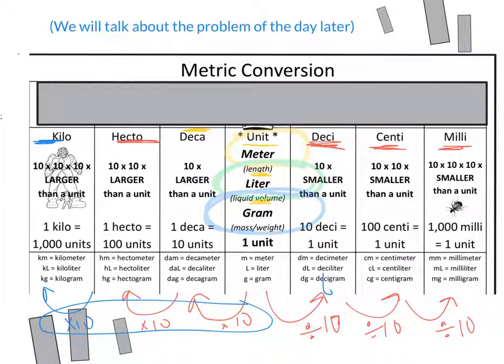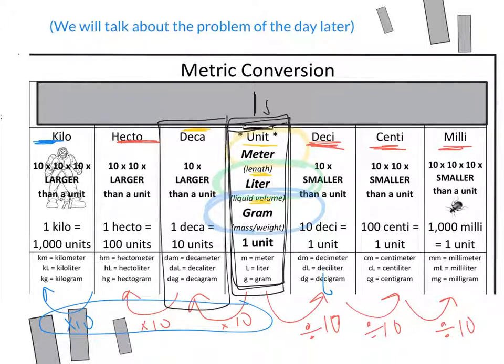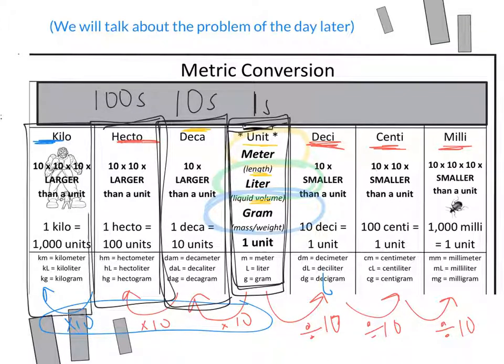We can think of this metric conversion chart just like a regular place value chart. Write this in your notebook. We can think of the ones as being the regular meters, the regular units. This is like the ones place. Then the decas would be the tens place, because it's 10 times bigger than the regular unit. The hectos would be like the hundreds place. And then finally, the kilos would be like the thousands place.